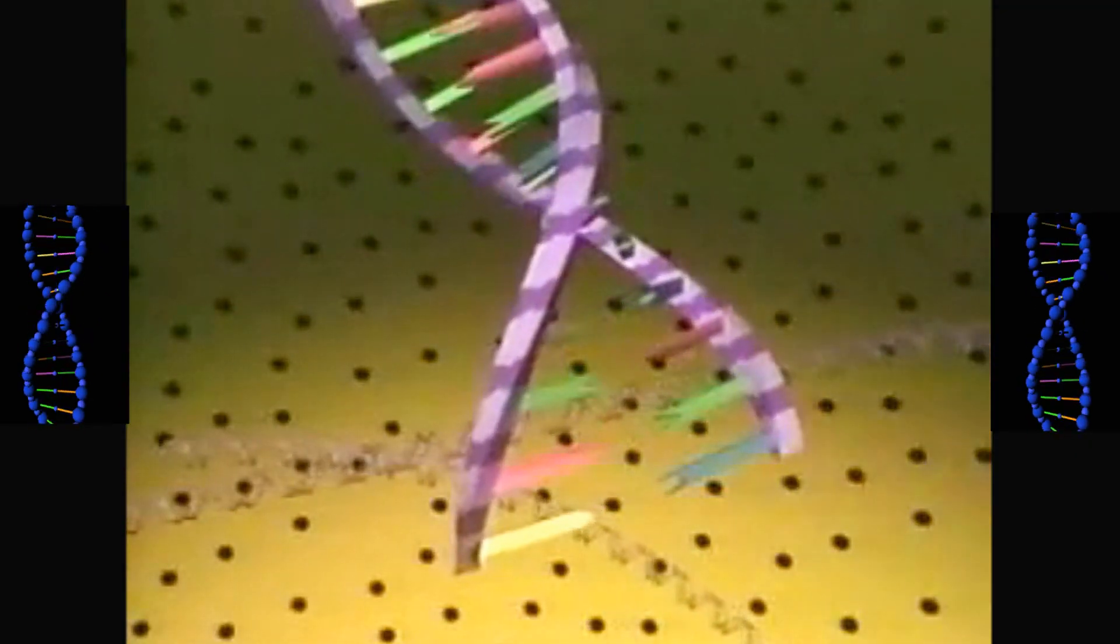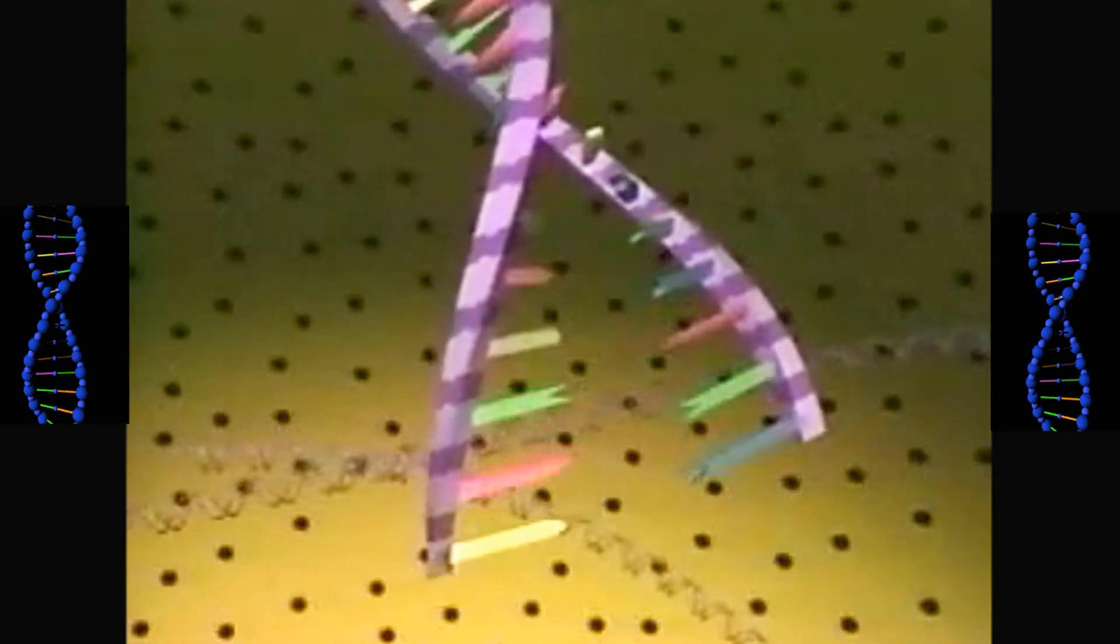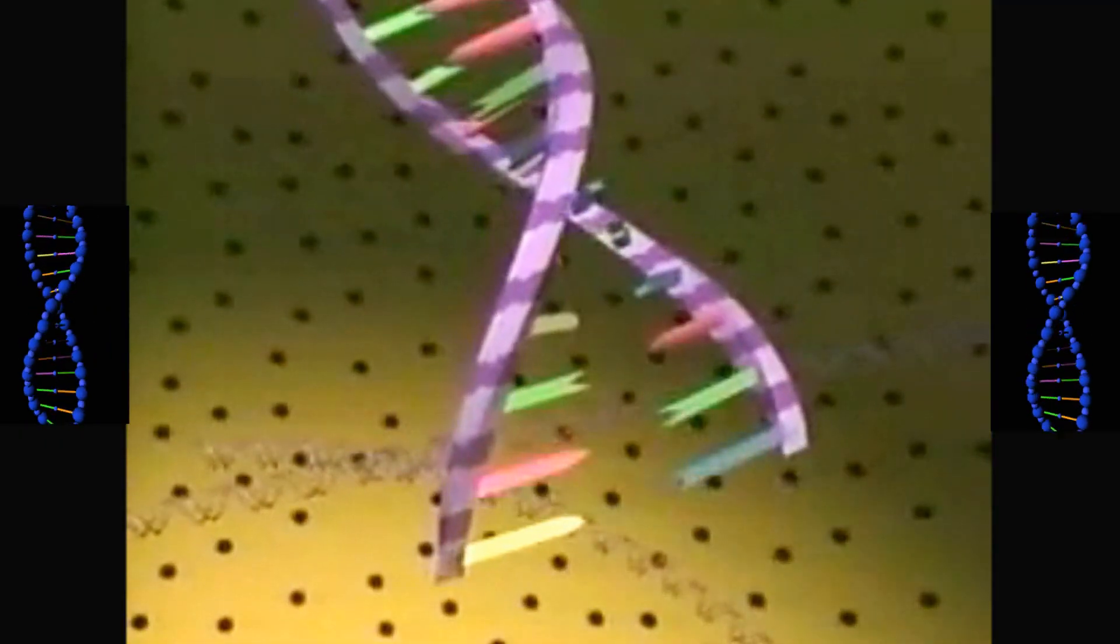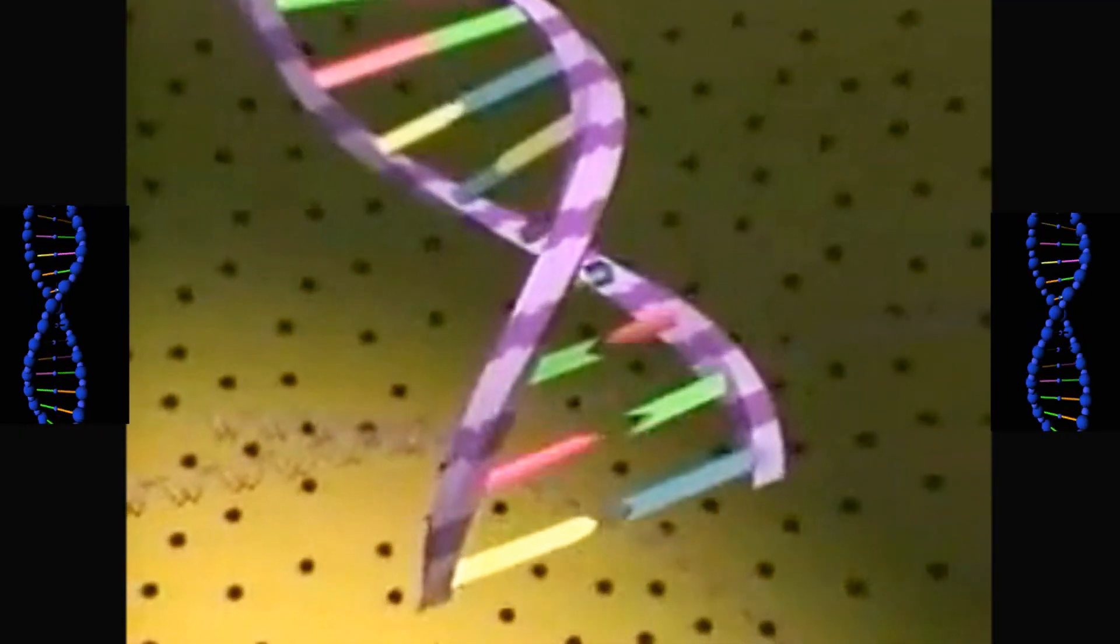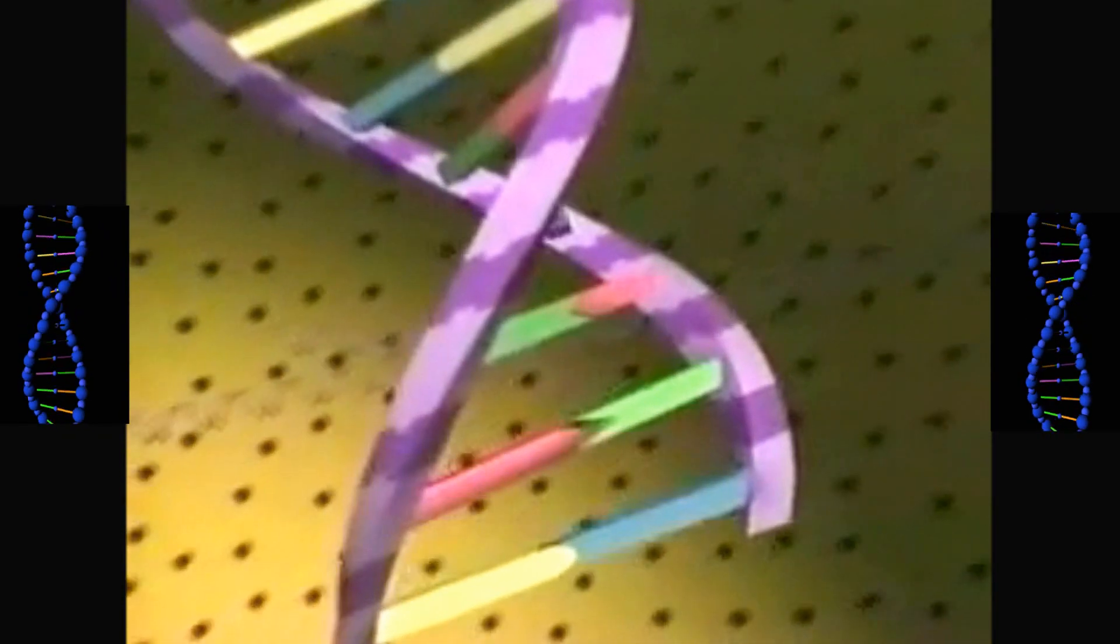These bases link up using hydrogen bonds in a very specific way. Adenine will bond only with thymine, A to T. Cytosine only bonds with guanine, C to G.